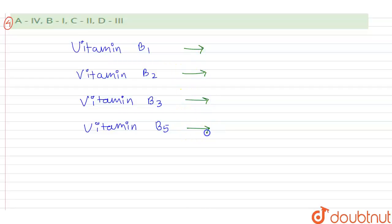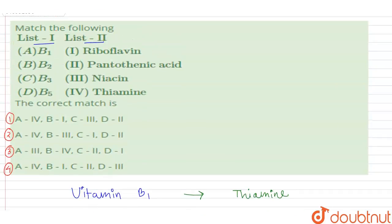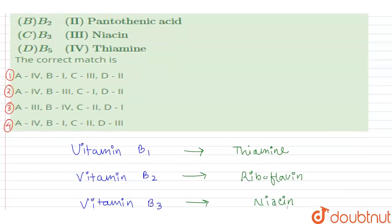We know that vitamin B1 has other name as thiamine, vitamin B2 has other name as riboflavin, vitamin B3 has other name as niacin, and vitamin B5 has other name as pantothenic acid.